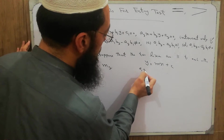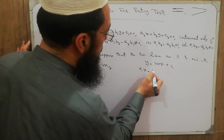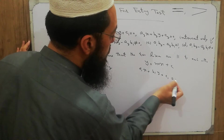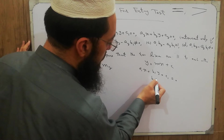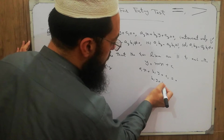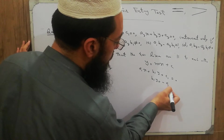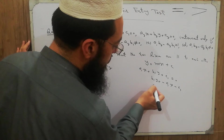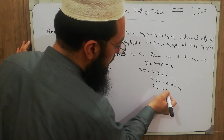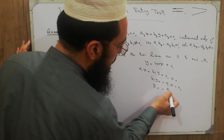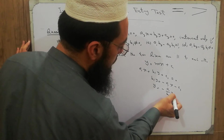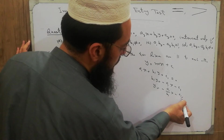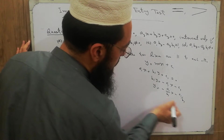For line 1: a1x + b1y + c1 = 0, so b1y = -a1x - c1. Dividing both sides by b1 gives y = (-a1/b1)x - c1/b1.